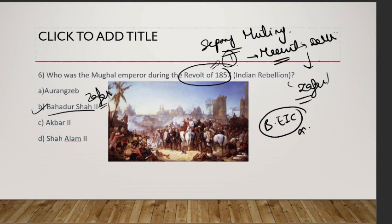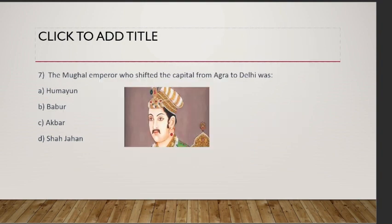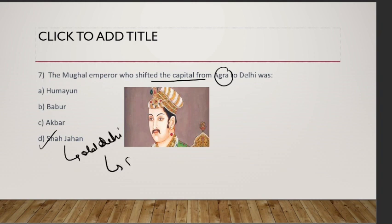The Mughal emperor who shifted the capital from Agra to Delhi was Shah Jahan. He named it Shahjahanabad — Old Delhi. This remained the capital of the Mughal Empire right until the end of their rule, up to the Revolt of 1857.